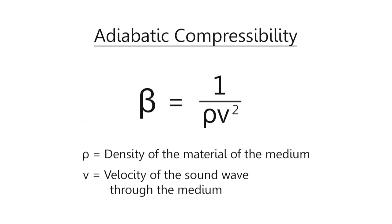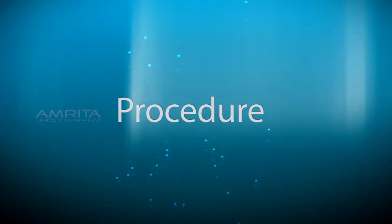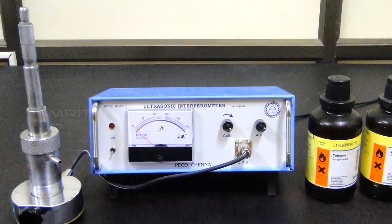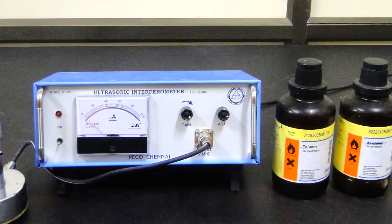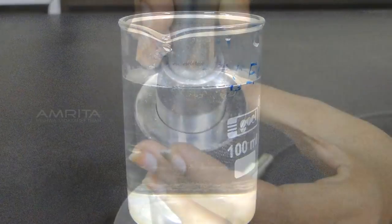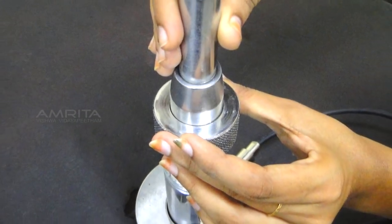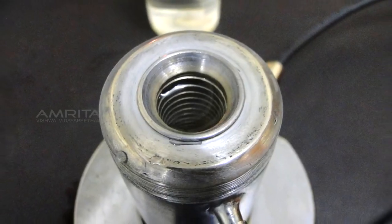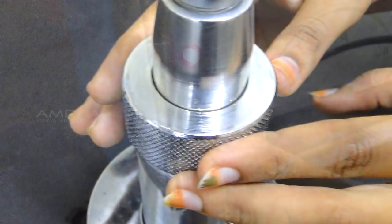Procedure: Arrange the ultrasonic interferometer and the liquid samples that are to be used. Take a liquid sample in a beaker. Unscrew the knurled cap of the interferometer, pour the sample into the interferometer cell, then tighten the cap. Switch on the power supply.